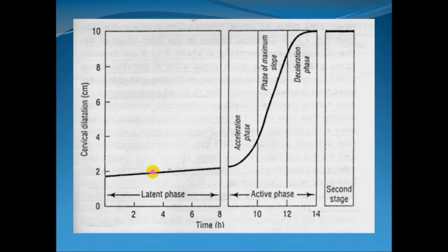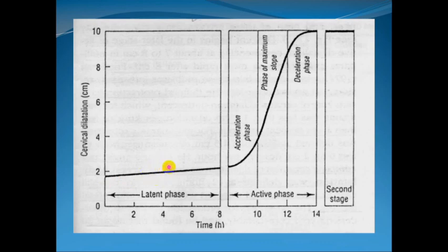For example, on pelvic examination the doctor may say the cervix is 50% effaced, meaning half of the cervical length has been taken up as part of the lower uterine segment. So despite regular rhythmic uterine contractions during the latent phase, there is no increment in cervical dilatation; instead there is progressive cervical effacement.